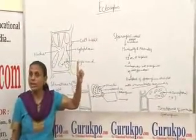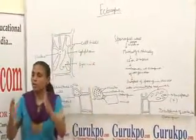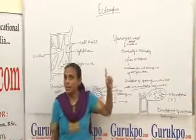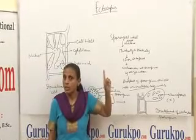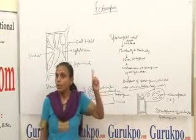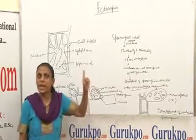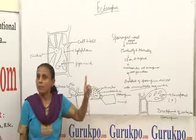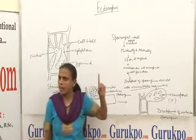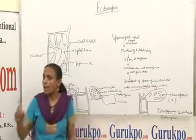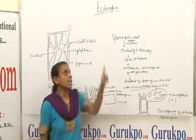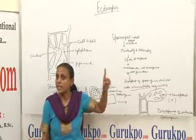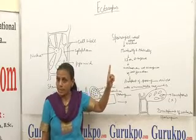Ectocarpus is cosmopolitan in distribution. It is found growing along the Pacific coast and the Atlantic coast of the ocean. Some species of Ectocarpus grow on the fins of fishes; these are epizoic species, for example Ectocarpus fasciculatus. Some species grow on larger algae such as Fucus and Laminaria, and these are called epiphytic species of Ectocarpus.